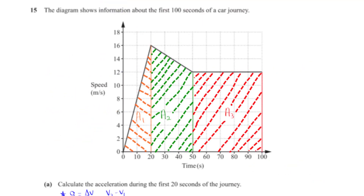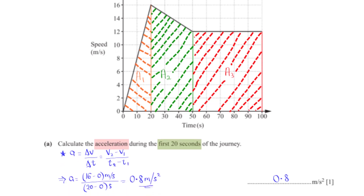The diagram shows information about the first 100 seconds of a car journey. Calculate the acceleration during the first 20 seconds. Acceleration equals the change in speed over time: (16 minus 0) divided by (20 minus 0), giving an acceleration of 0.8 meters per second squared.